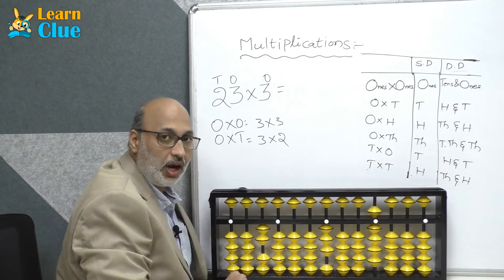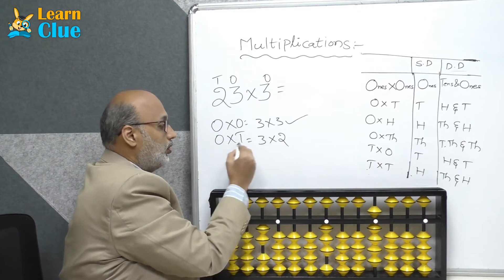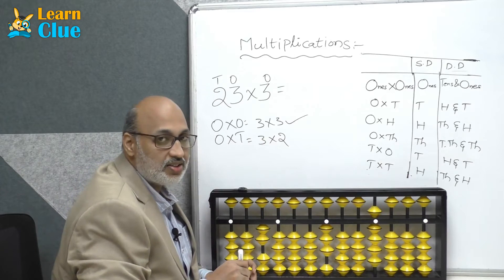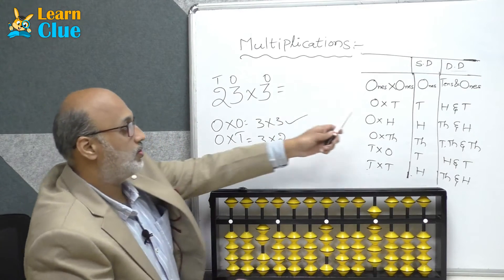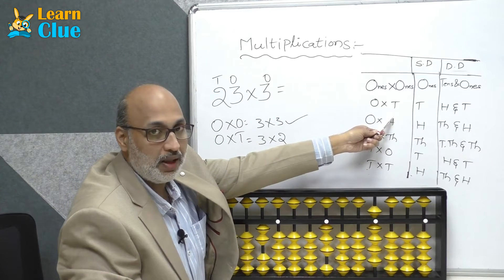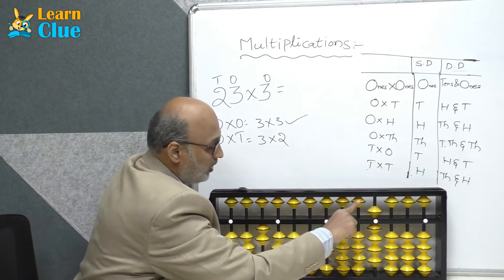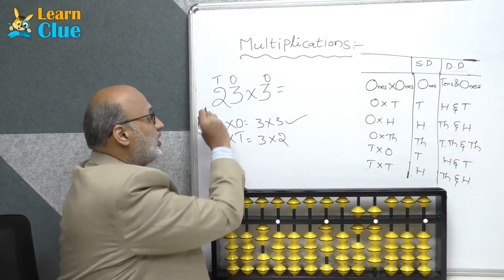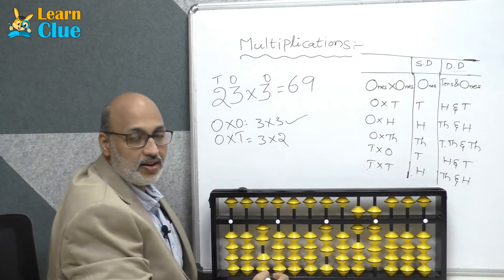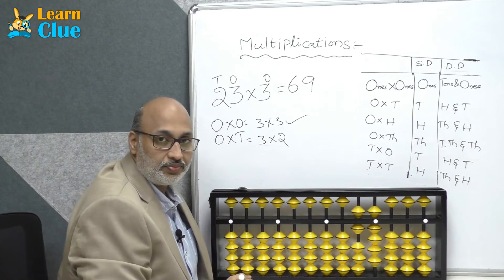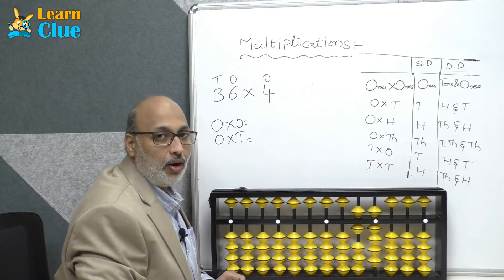We have done the calculation 3 into 3 — let's put it down. Now the leftover is ones into tens, that is 3 into 2. 3 twos are 6. The 2 is in the tens place, so for ones into tens, if it is a single digit number you are supposed to place the answer in the tens place. So 3 twos are 6, giving us 23 into 3 equals 69.